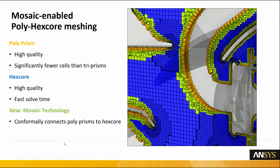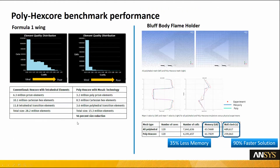So what is the end result of that? Originally we had a mesh that was TETS or polyhedra — it could have been TETS converted to polyhedra. Now with the new technology, you can see we've got very similar results. We've used 35% less memory, it's 90% faster, and we've got a much higher quality mesh.